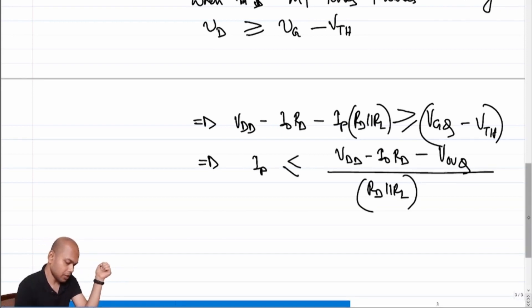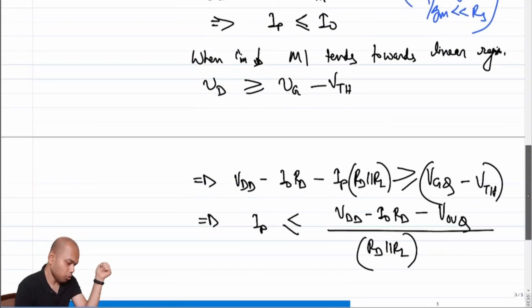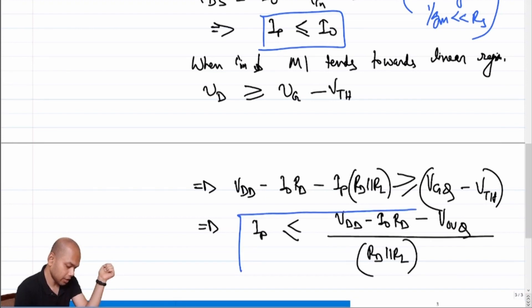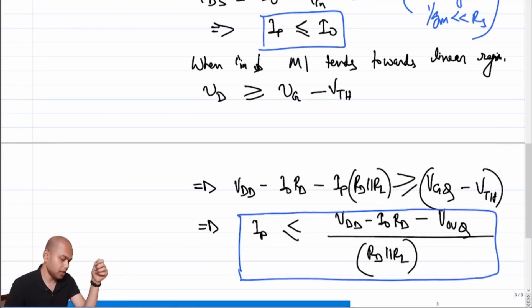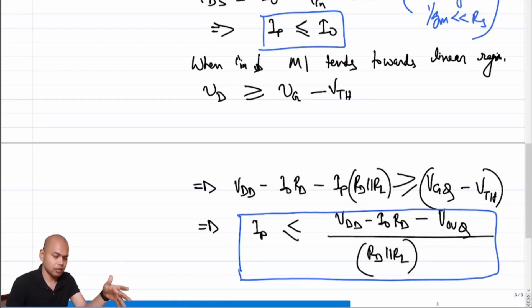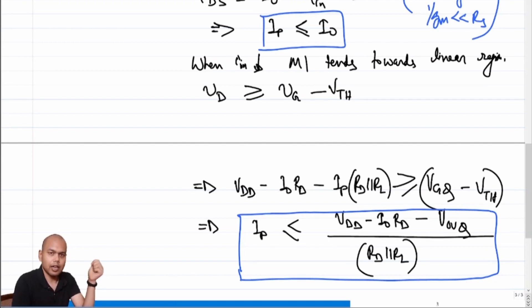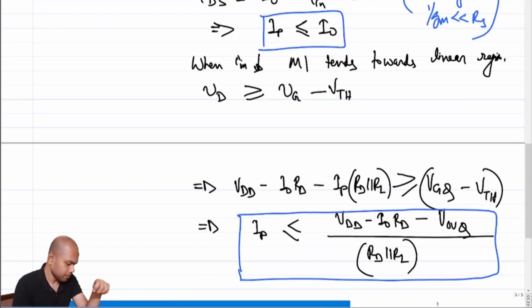This gives the linear-region constraint: IP ≤ (VDD − I₀·Rd − V_overdrive_Q) / (Rd ∥ RL). There are now two constraints on IP. Whichever is the minimum of the two — the cutoff constraint and the linear-region constraint — determines the maximum allowable amplitude, ensuring the transistor remains in proper operating condition.